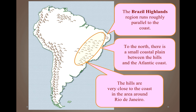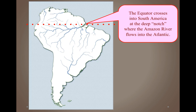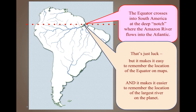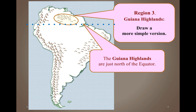There is a small coastal plain between the Brazil Highlands and the Atlantic coast. The hills are very close to the coast in the area around Rio de Janeiro. The equator crosses into South America at a deep notch where the Amazon River flows into the Atlantic — a useful landmark for remembering where the equator is. The third region, just north of the equator, is the Guiana Highlands. Draw that line on your map.